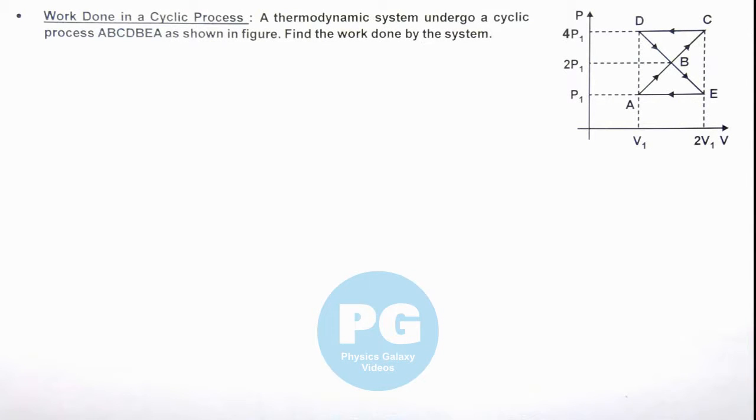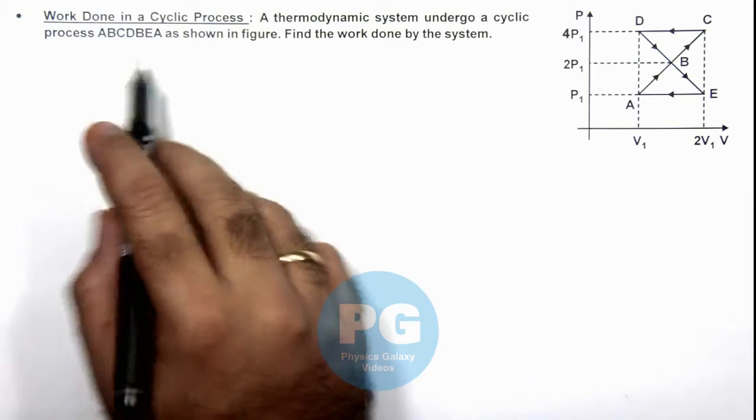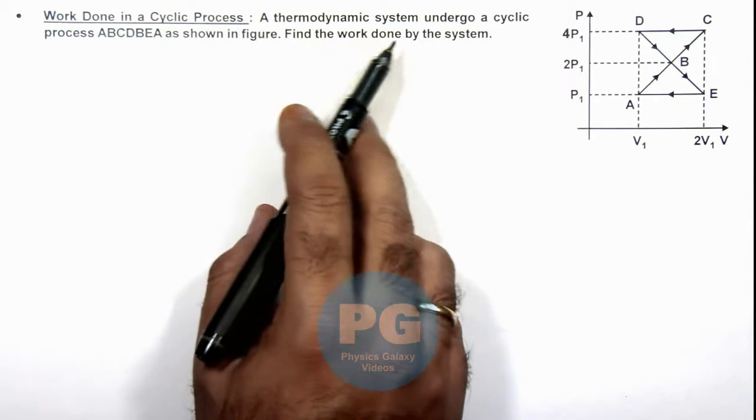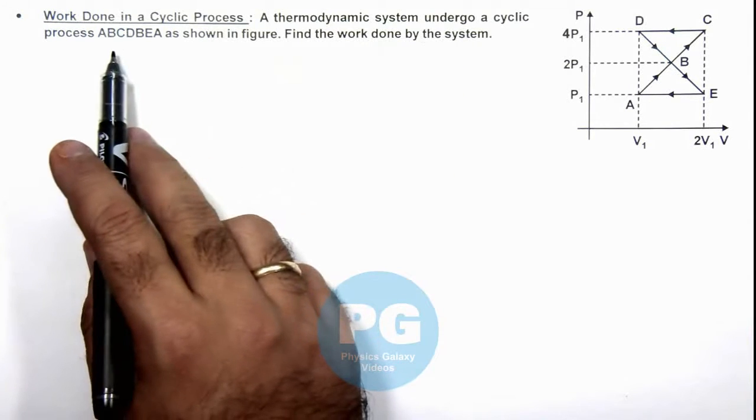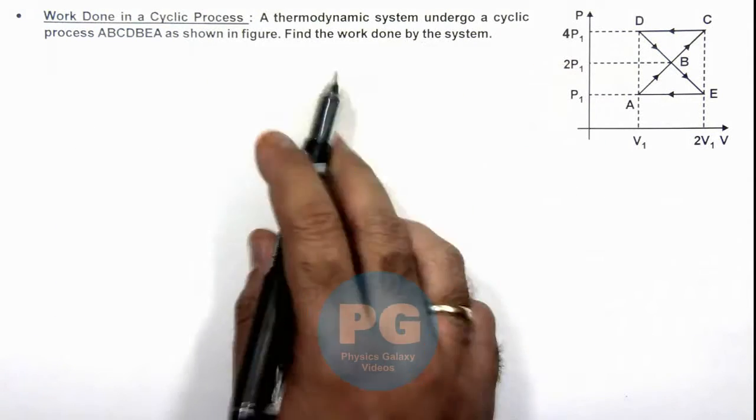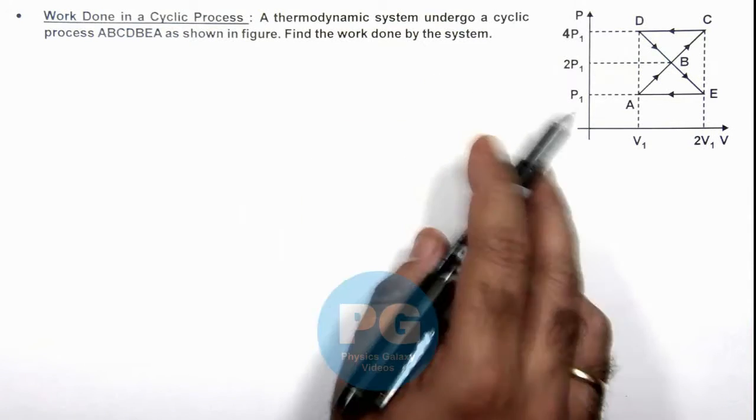In this illustration, we'll study work done in a cyclic process. Here, a thermodynamic system undergoes cyclic process ABCDBEAY, which is shown here. We are required to find the work done by the system.